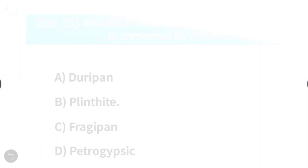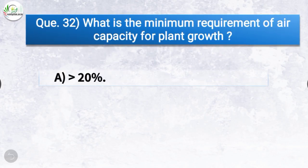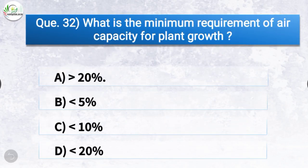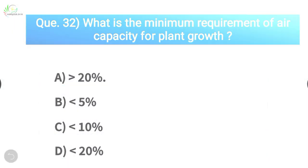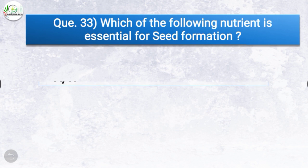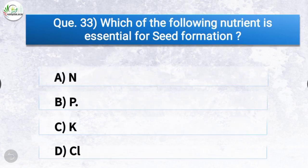Question number thirty-two: what is the minimum requirement of air capacity for plant growth? The correct answer is greater than 20 percent. Question number thirty-three: which of the following nutrients is essential for seed formation? The correct answer is option B, phosphorus. Phosphorus is essential for seed formation.